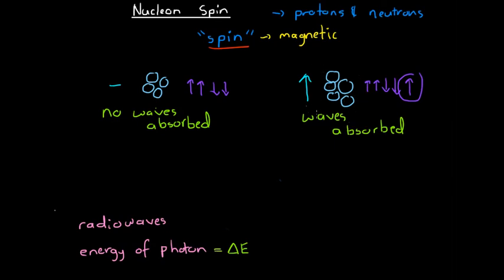That's a very important thing to consider when we look at spectroscopy. We can only analyze nuclei containing an odd number of nucleons due to the cancellation of nucleon spins when there is an even number of nucleons. That's how nucleon spin works, that's how we can excite it, and this is a really important idea when we're dealing with spectroscopy.